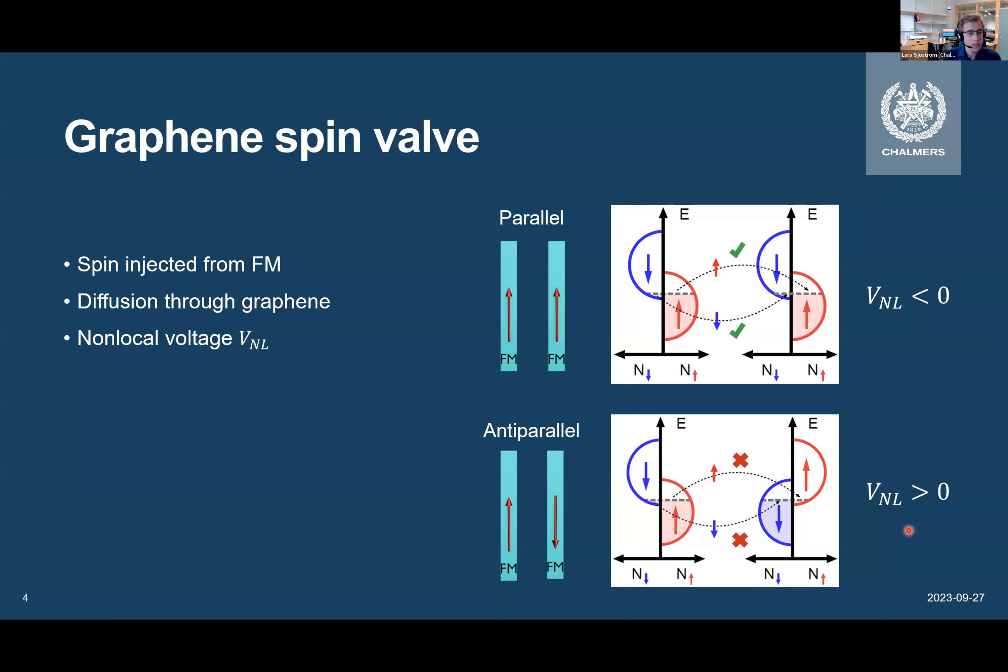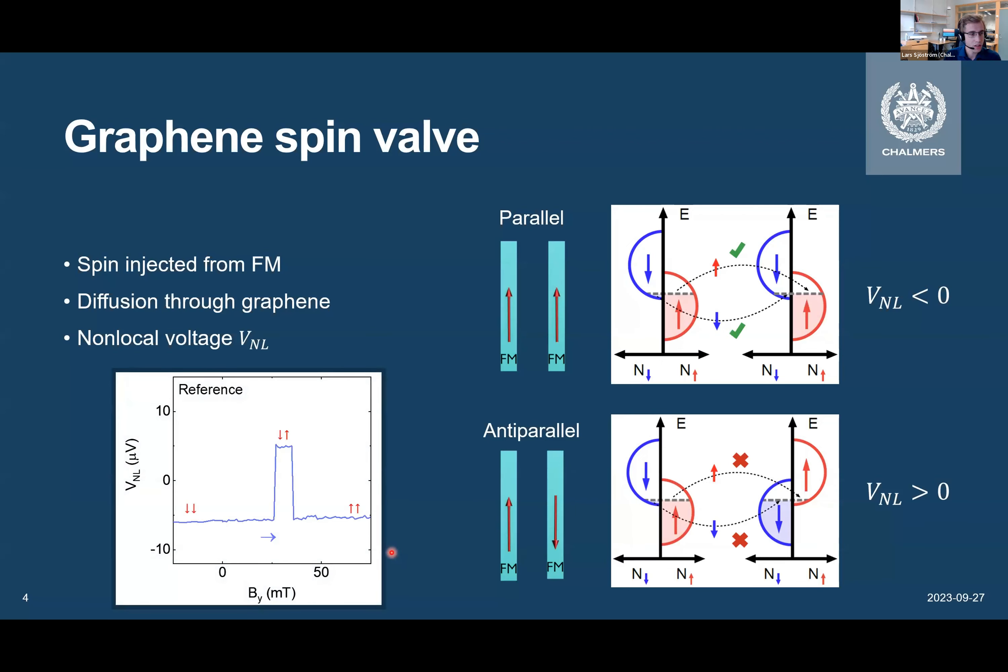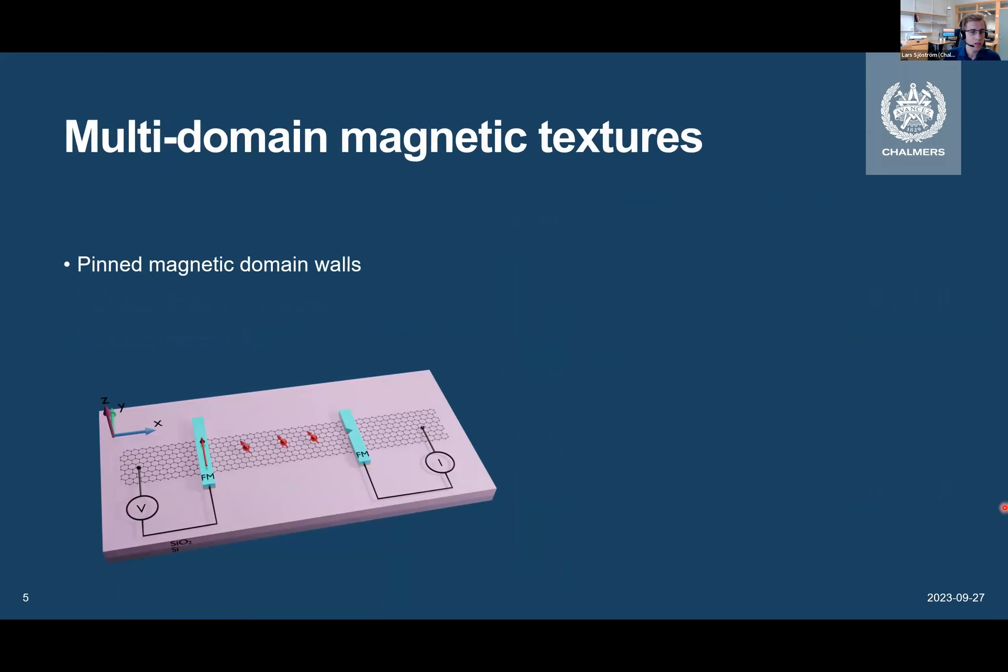So what we normally do is that we sweep an external magnetic field. And these contacts are designed to have slightly different coercive fields. They will switch at different points. So initially, we'll have a parallel state. Then one of the contacts will switch. So we have antiparallel state. Then the second contact will also switch. So we go back to this parallel state, except now we will have positive magnetization instead of negative. So this is the basic case. Yes, this is very well known in the Spintronics community.